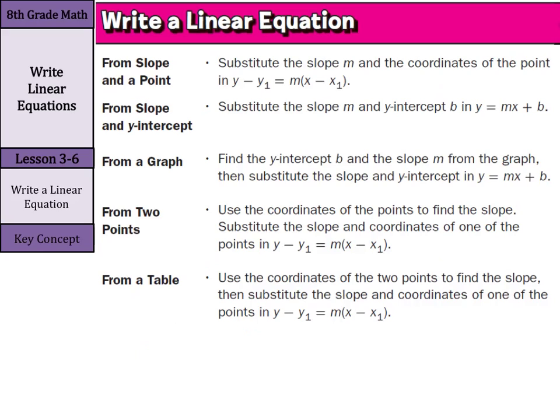When we write a linear equation, there are a lot of different ways we can do this, and this table summarizes everything. If we're given a slope and a point, we can substitute the slope and the coordinates of the point into our point-slope form. If we're given the slope and a y-intercept, then we can use the slope-intercept form using m and b. If we're given a graph and we see the y-intercept, we can make that b, then calculate the slope from the graph and use slope-intercept form again. If we're given two points, we use the coordinates to find the slope, then substitute the slope and coordinates of one of the points into point-slope form. And we can do the same thing if we're given a table — just use two of the points to get the slope, then substitute into point-slope form.